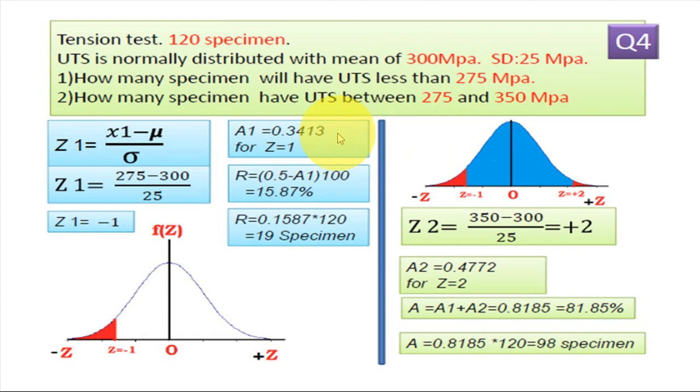So this is the solution for case 1. Now for case 2, how many specimen have ultimate tensile strength between 275 to 350 MPa. Now we know one limit 275, that is equal to from 0 to z equal to minus 1, so we mark here.